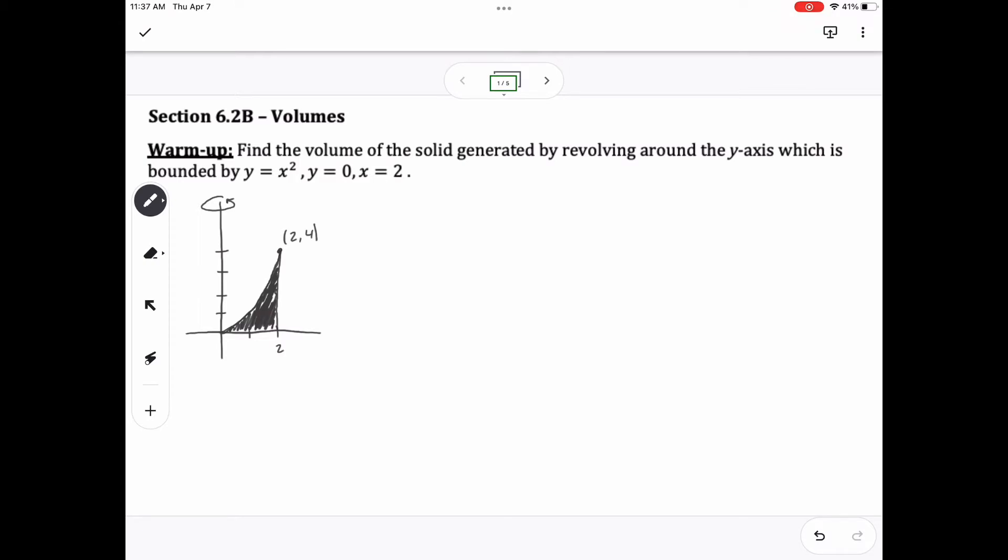Here we have a warm-up problem that we discussed in 6.2a. Find the volume of the solid generated by revolving around the y-axis, which is bounded by y equals x squared, y equals 0, and x equals 2. You have two different methods: washer slash disk method where we solve for x because we're rotating around the y, or we can use shells to keep it in terms of x.